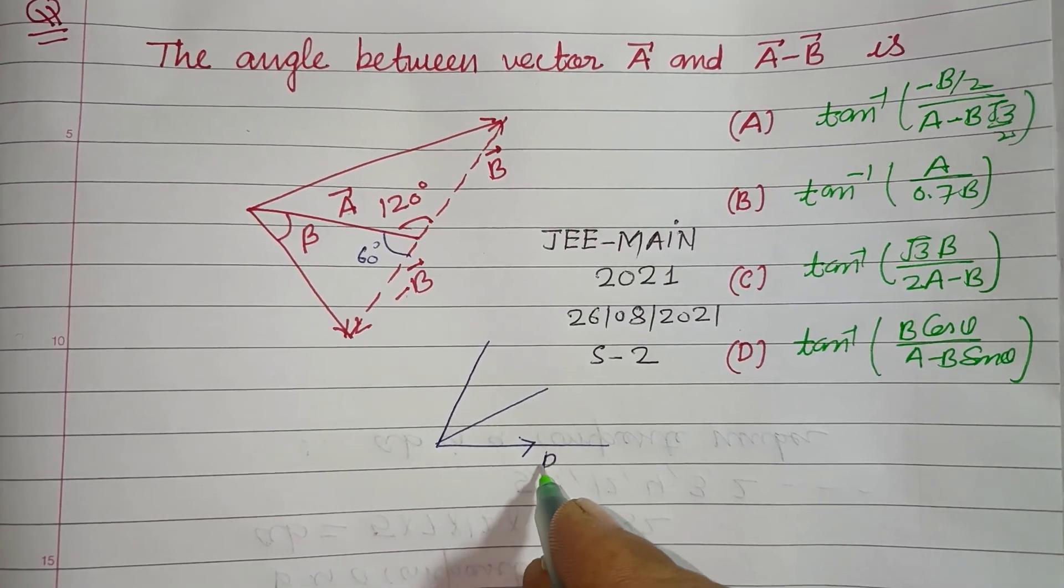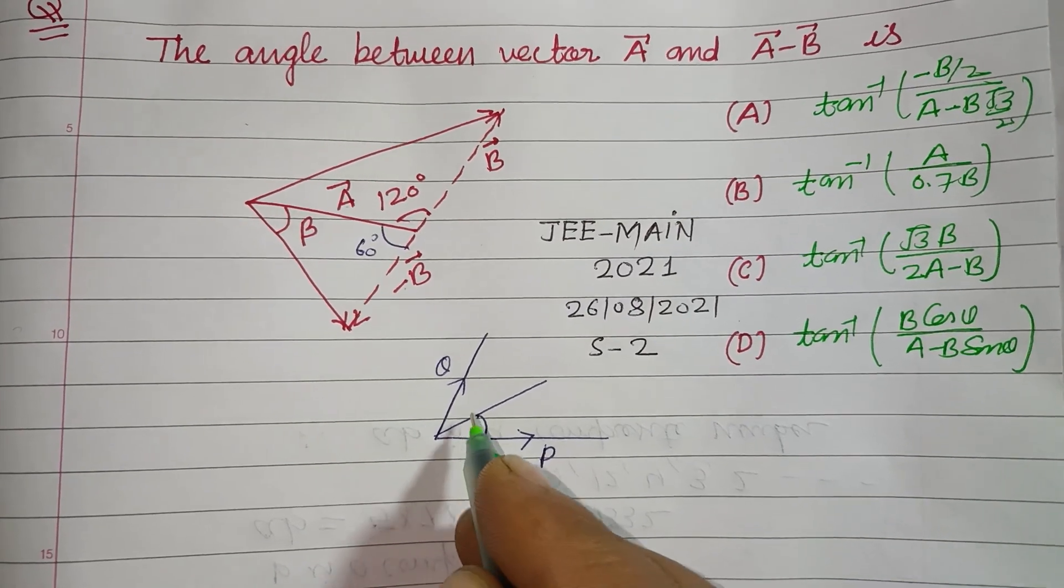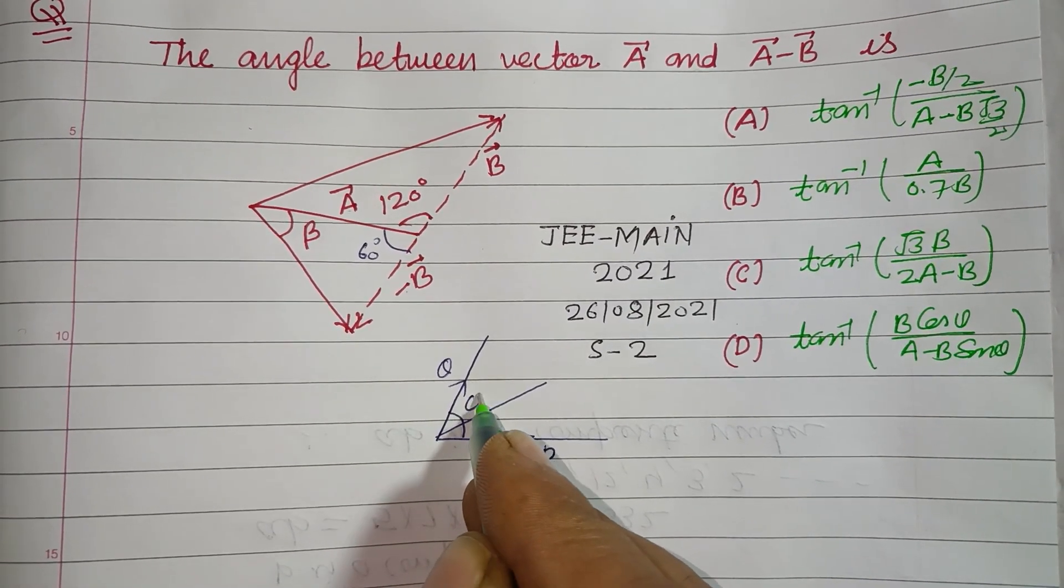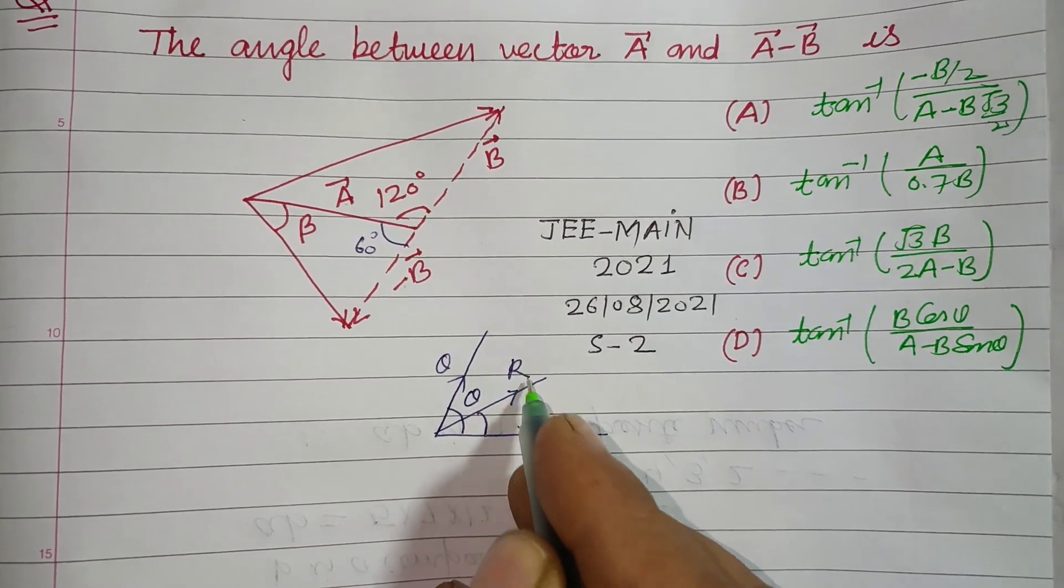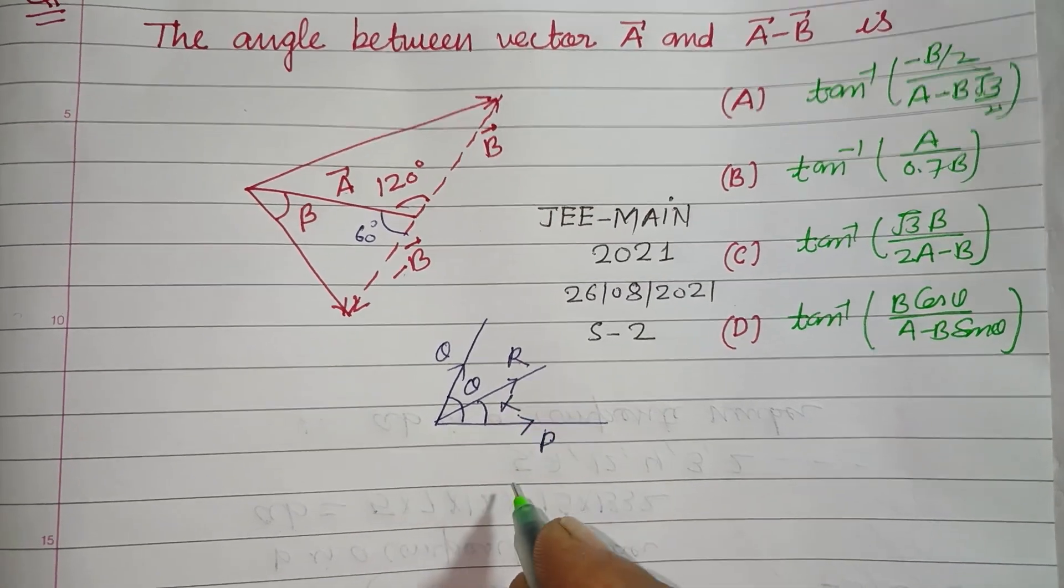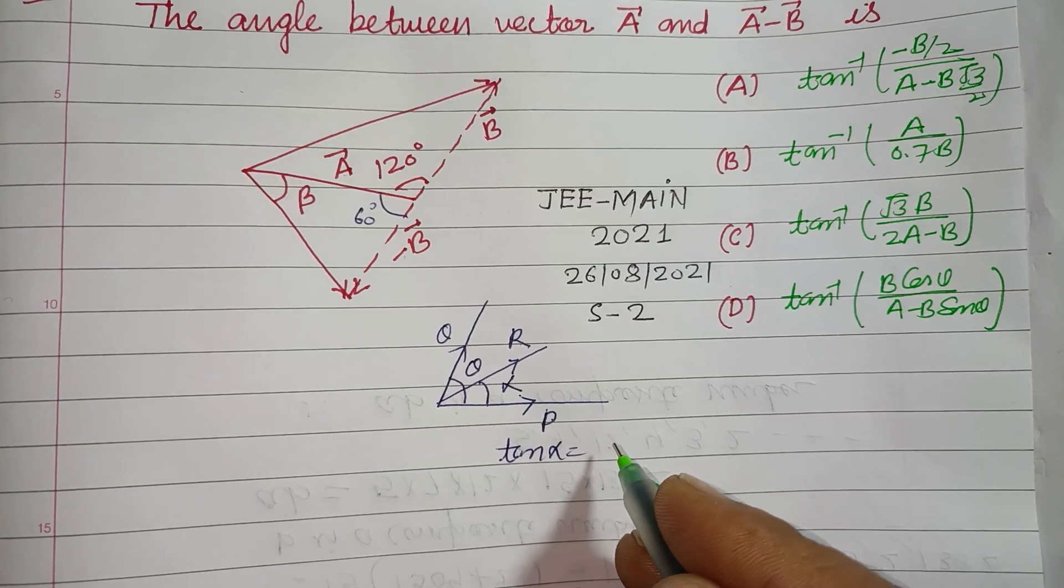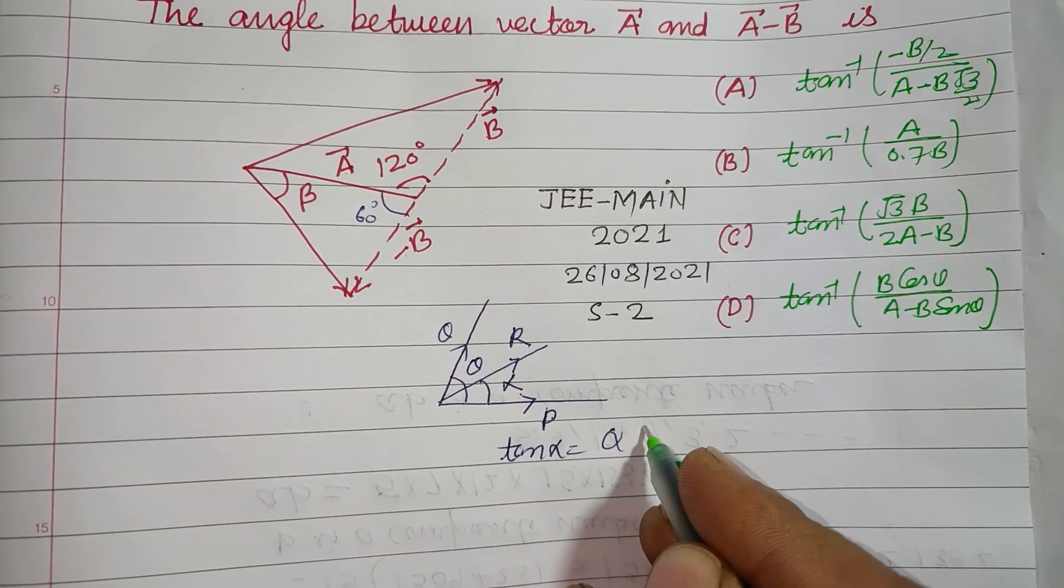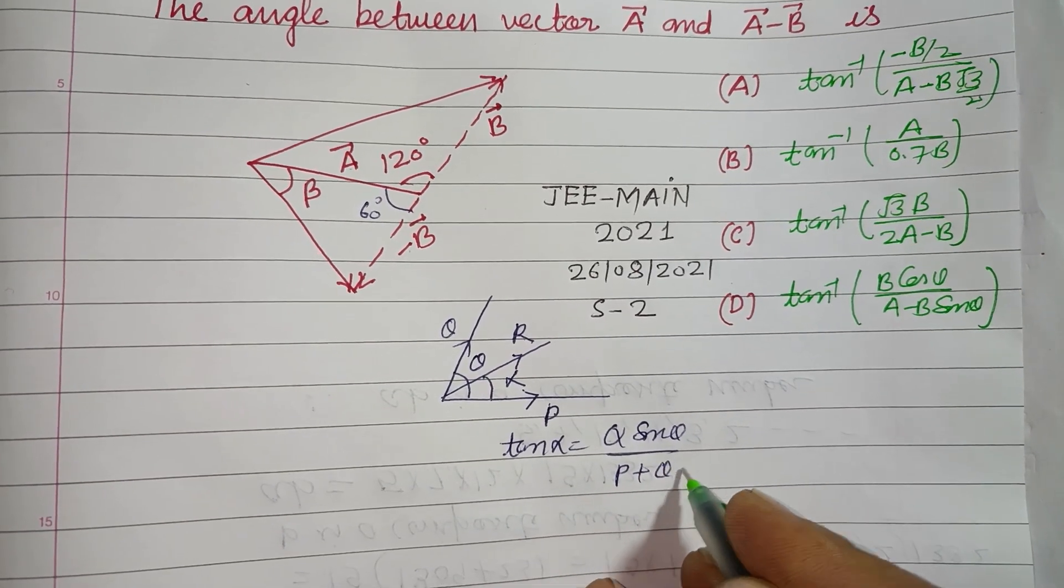If this vector is P and this vector is Q and the angle between them is theta, then R is the resultant and angle between resultant and P is alpha. Then tan alpha equal to Q sin theta over P plus Q cos theta.